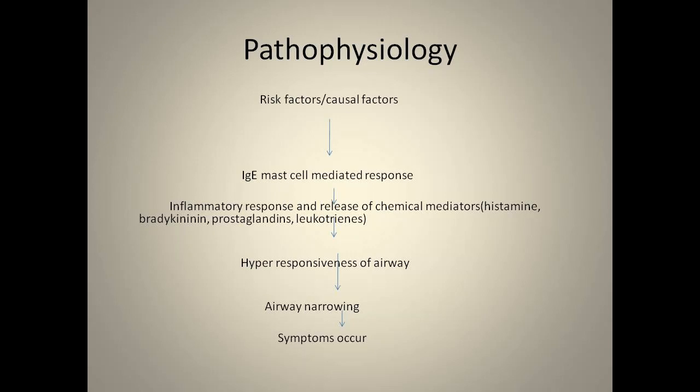In that case, the person will have an IgE mast cell mediated response. The mast cells generate an inflammatory response in the airways. This inflammatory response releases chemical mediators such as histamine, bradykinin, prostaglandins, and leukotrienes, which cause bronchoconstriction and excess mucus production, narrowing the airway and producing symptoms.